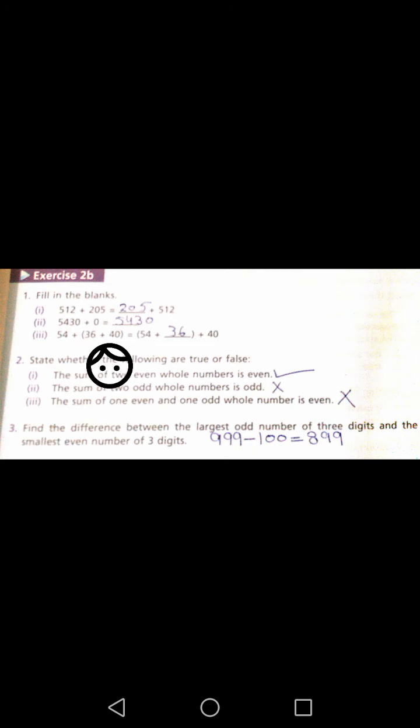Next, 54 plus bracket 36 plus 40 is equals to 54 plus blank plus 40. This side there are 3 numbers given, but here you have 2 numbers given. Check which number is missing. The number which is missing is 36.